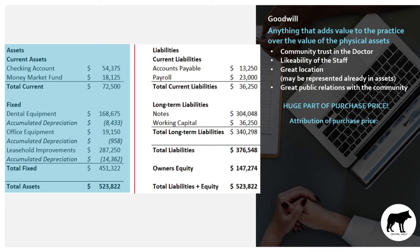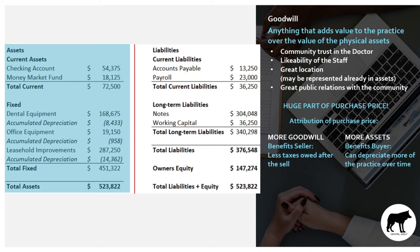Why would you want to attribute more or less to goodwill as a buyer? If you put more value on the goodwill of the practice, it really benefits the seller — they owe less taxes after the sale. On the other hand, if you put more value on the assets, it benefits the buyer, because they can depreciate more of the value of the practice over time and offset their tax liability in the future.